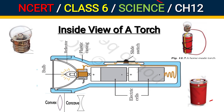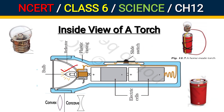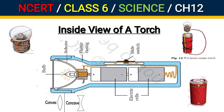First, we will cover the first topic: inside view of a torch. If you can see this figure and its internal structure, here there are two electric cells. There is a sliding switch. There is an electric bulb placed inside the outer covering. Under the outer covering there is a reflector. There is a wire connected from the cell's negative terminal which leads to the switch, and the switch is connected to the bulb terminal.